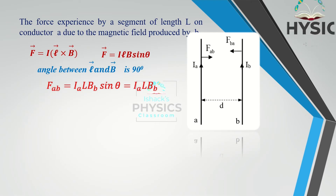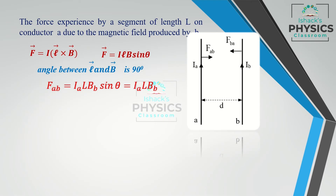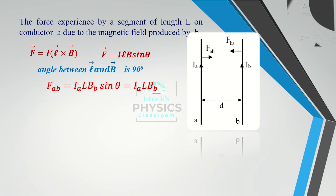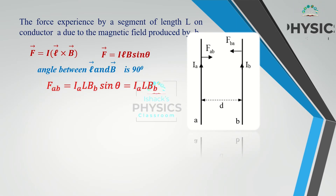Now we apply Ampere's circuit law. The first application: the magnetic field produced by a long straight current-carrying conductor is given by B = μ0I / 2πr.